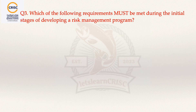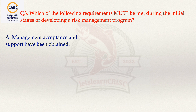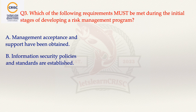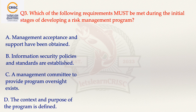Moving next to question number 3, which states: which of the following requirements must be met during the initial stages of developing a risk management program? The options are: option A, management acceptance and support have been obtained; option B, information security policies and standards are established; option C, a management committee to provide program oversight exists; and option D, the context and purpose of the program is defined. The correct answer is option D.